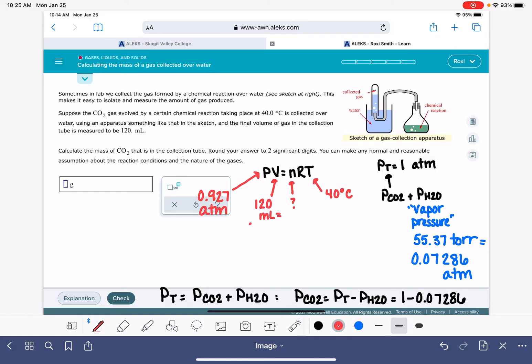Let's get these converted into the correct units. The volume is 0.120 liters. The temperature in units of Kelvin is 313.